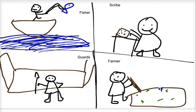Jobs that they had were fishers, scribes who kept records and what they traded about the city. And guards who, of course, protect the city-state and farmers.